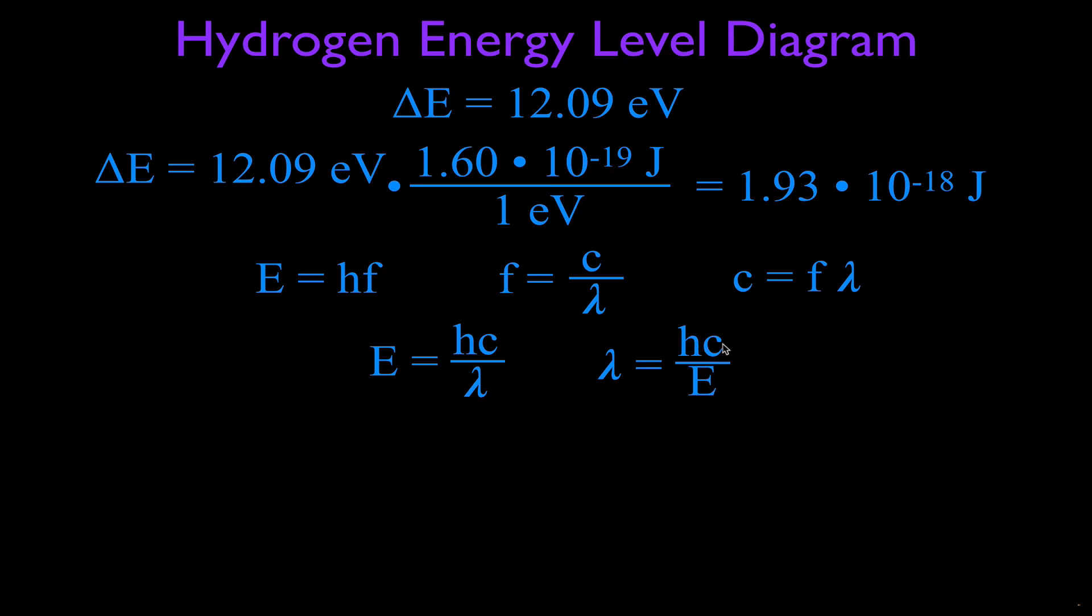We can't put this energy in 12.09 electron volts into this equation. Based on the units that these two values have, Planck's constant and the speed of light, we first have to convert to joules. We have to put the joules in here, not the electron volts.